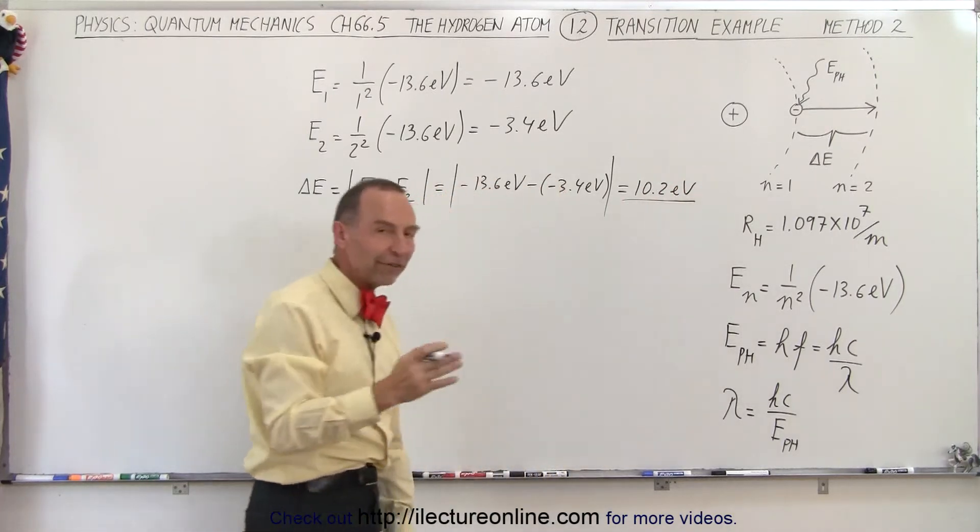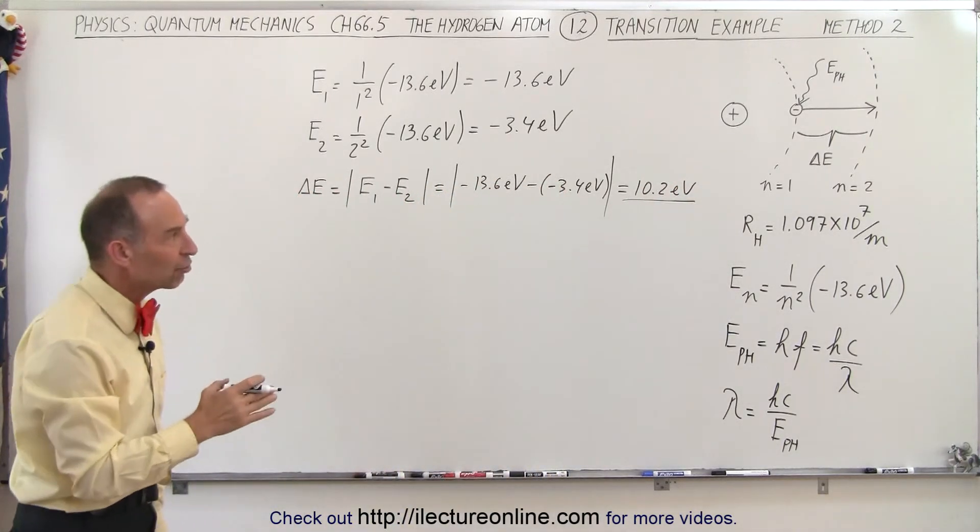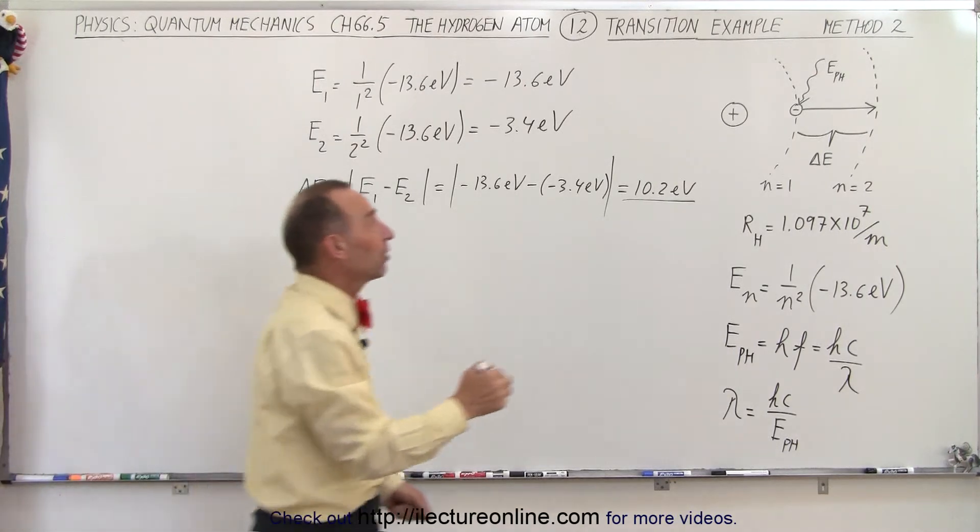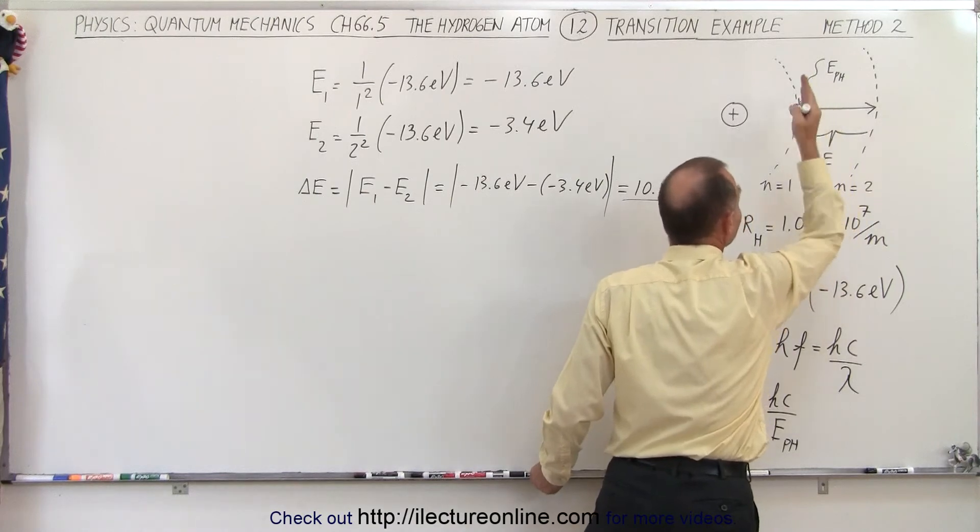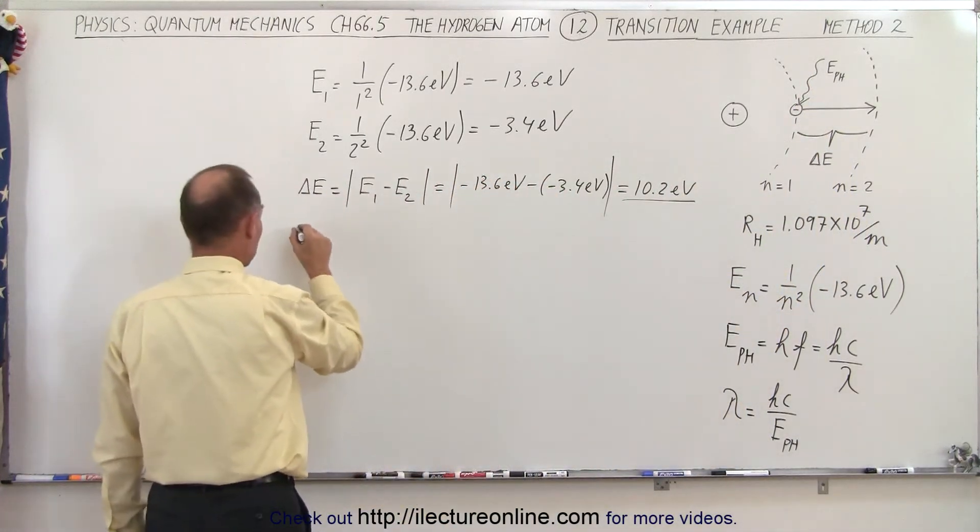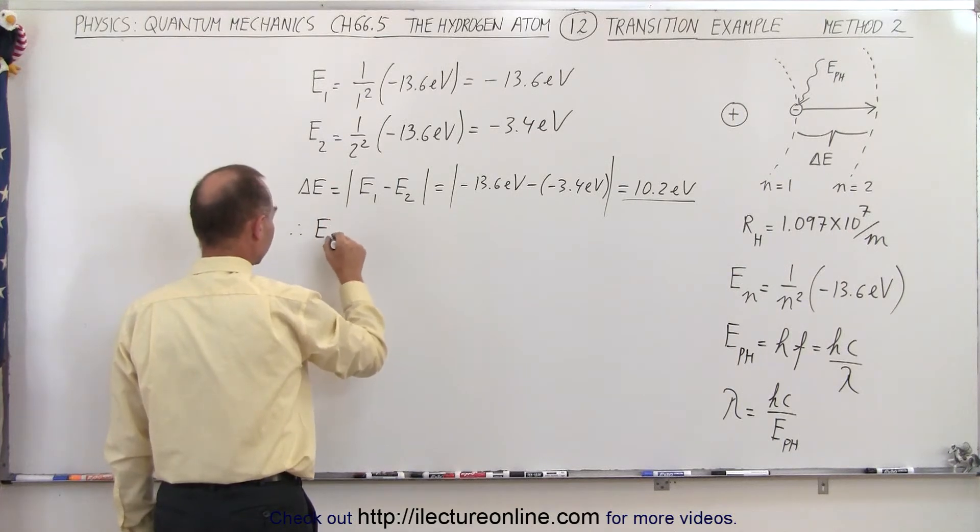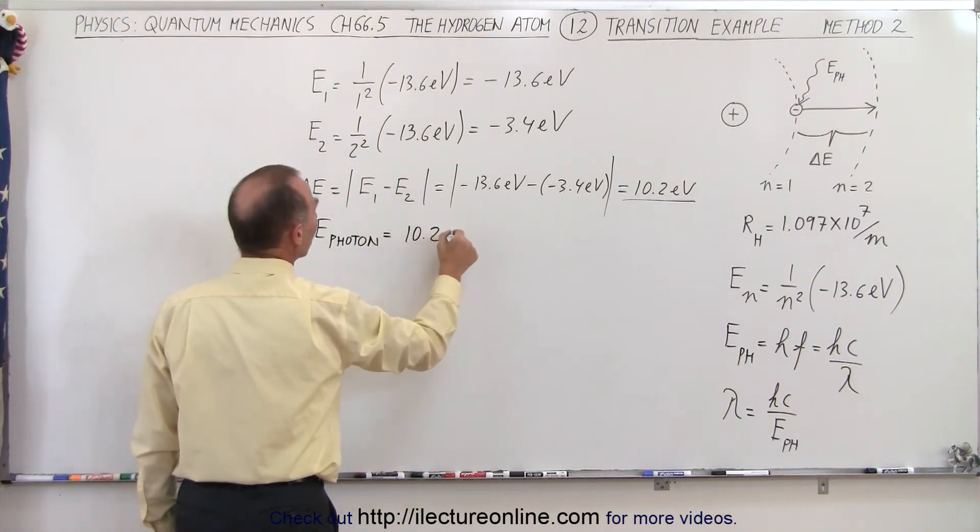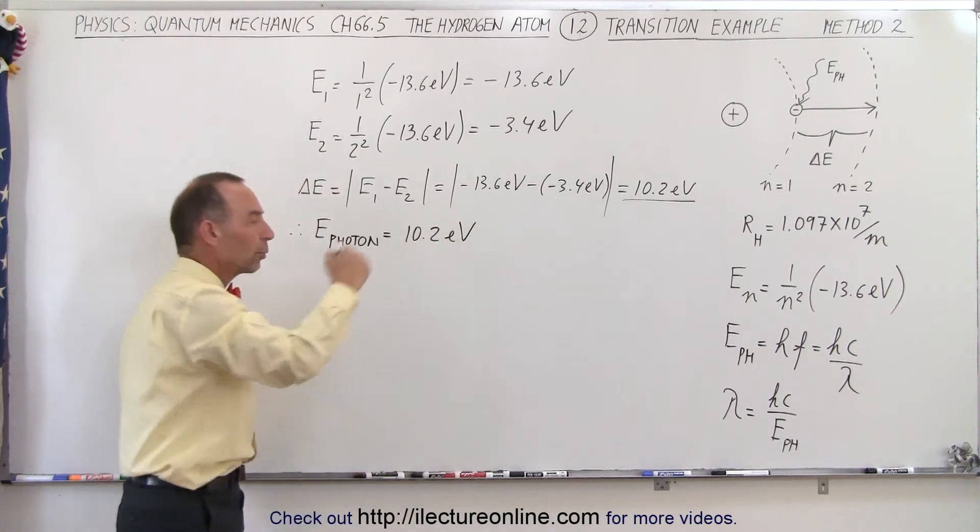So that's the energy difference between the first and the second energy level in the hydrogen atom, which means that the photon that's absorbed to make this jump happen has to have exactly 10.2 electron volts, which means, therefore, the energy of the photon must also be 10.2 electron volts. In this case, the photon will be absorbed.